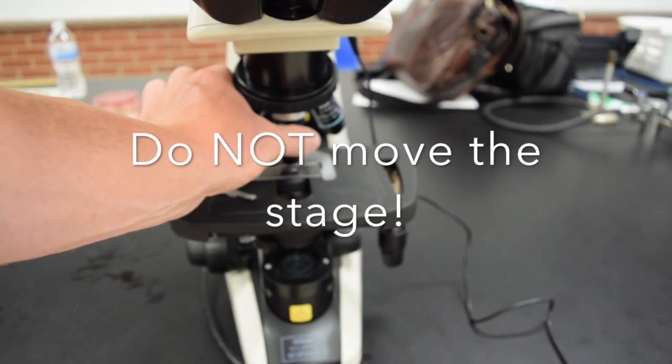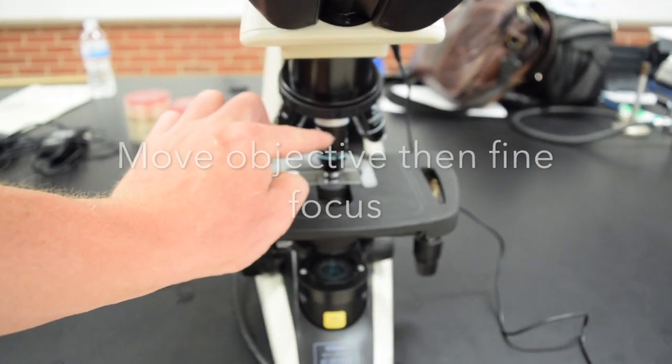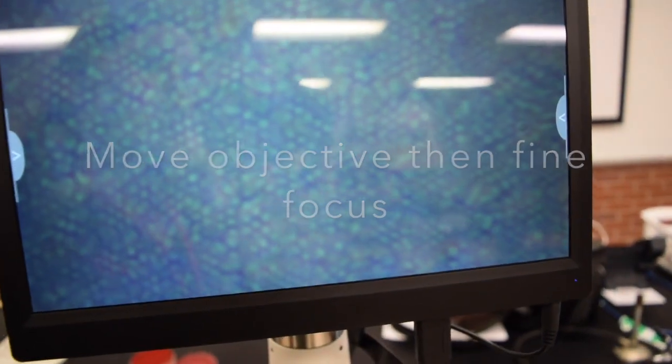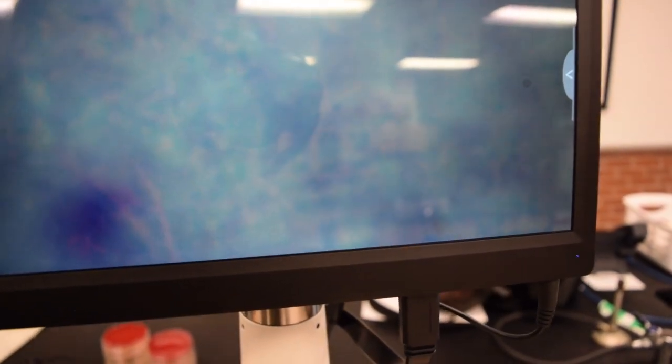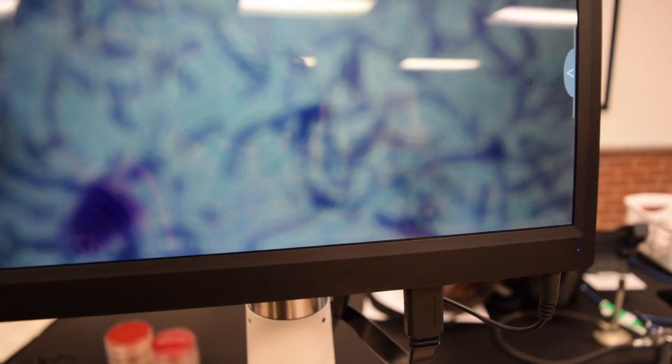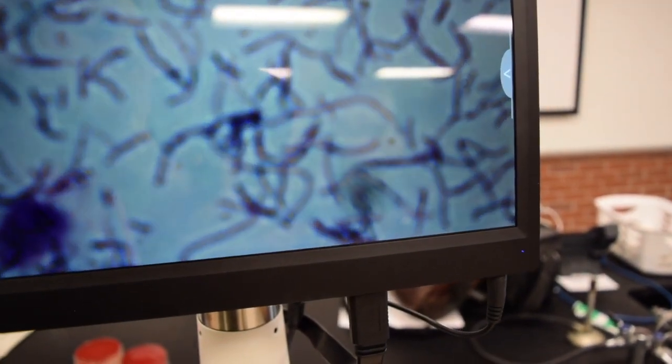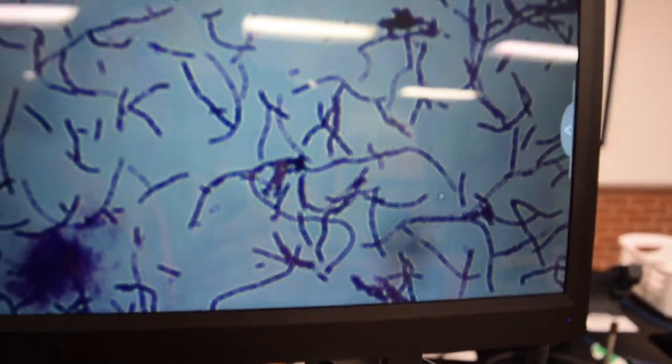Moving to the 40x position - notice how the image went out of focus. From here, all I'm doing is using the fine focus. I'm turning it towards me in this case - just the fine focus, the outer portion, not the coarse. Sometimes you have to turn it away from you depending on the scope. Now we're looking at that bacteria at 400 times magnified.